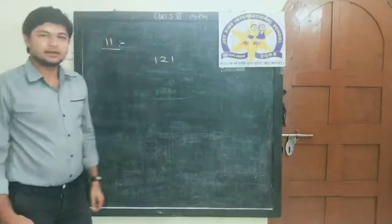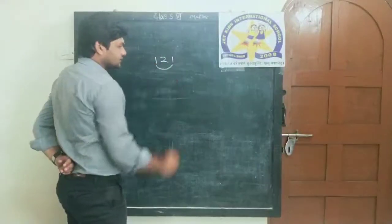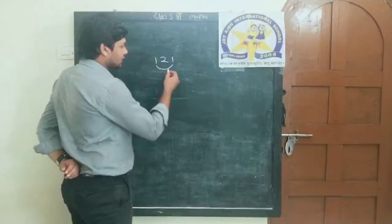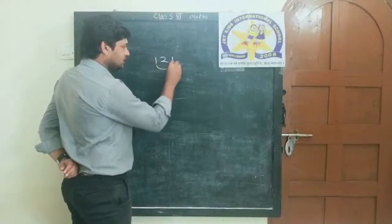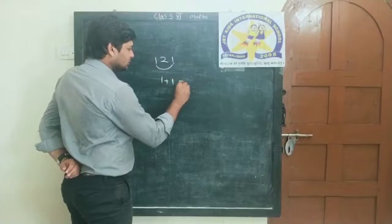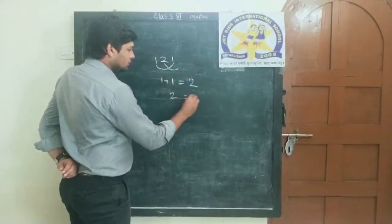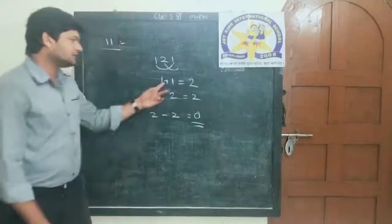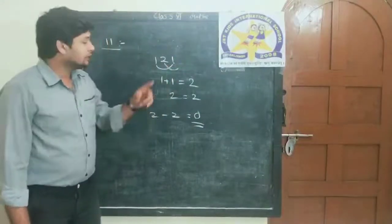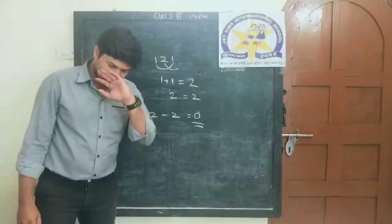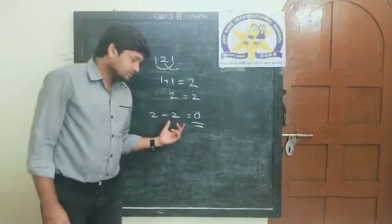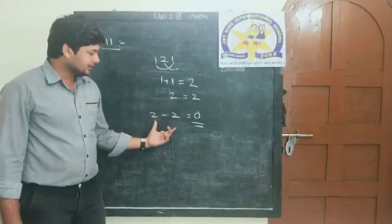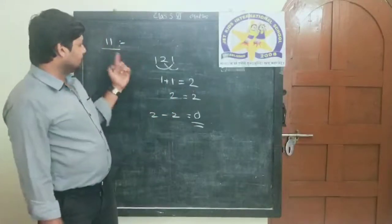What we are doing is taking alternate digits. For 121: 1 plus 1 equals 2 from the odd positions, and 2 from the even position. We take the difference: 2 minus 2 equals 0. If the difference of the sum of alternate digits is divisible by 11 — and 0 is divisible by any number — then the whole number is divisible by 11.